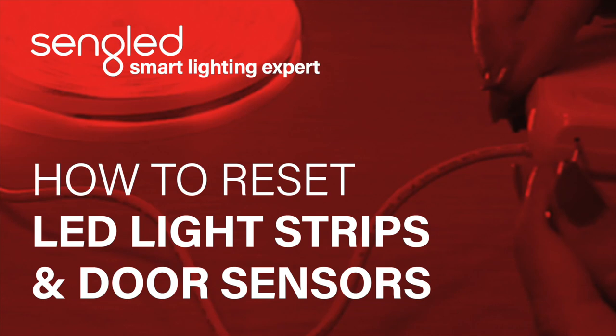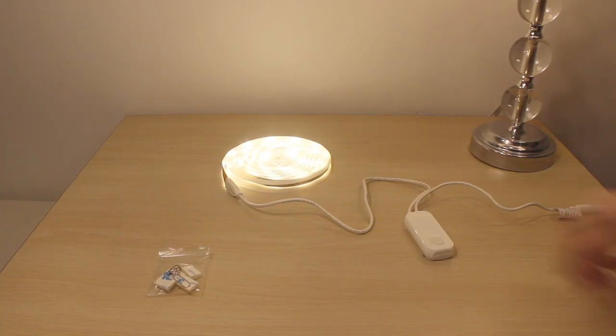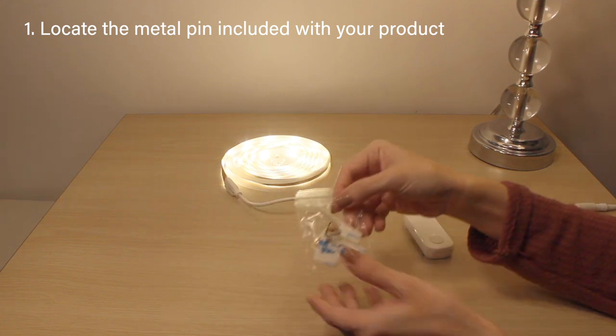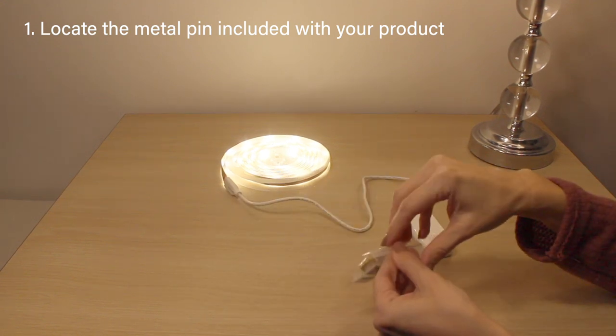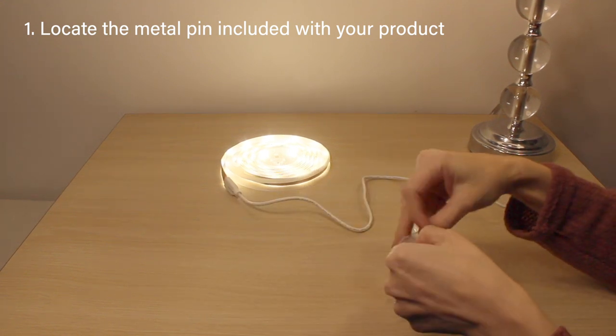This is a video explaining how to reset your Sengled LED strips and door sensors. First, look within the little bag provided within the packaging. You should be able to locate a little pin that will help you reset the device.